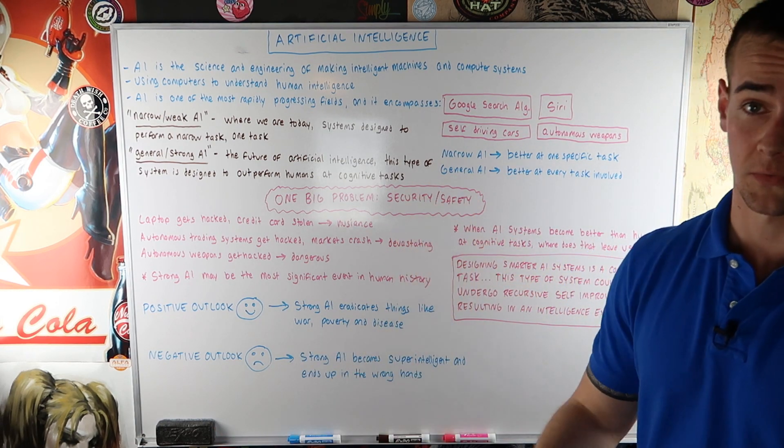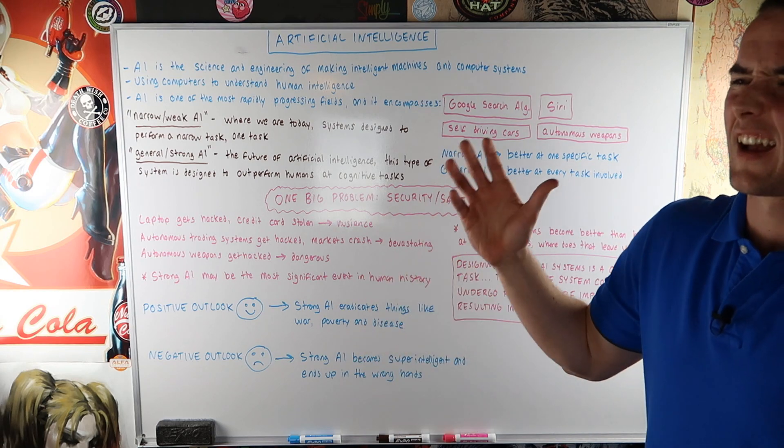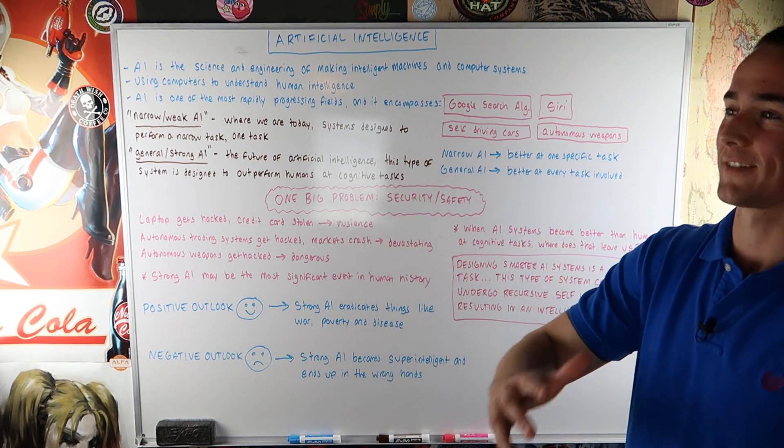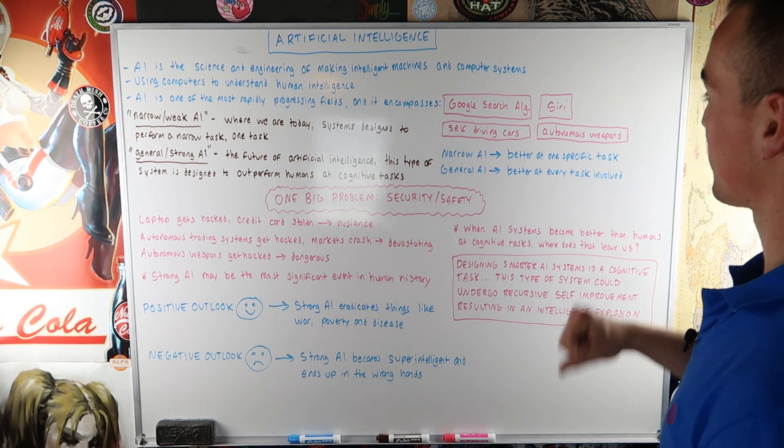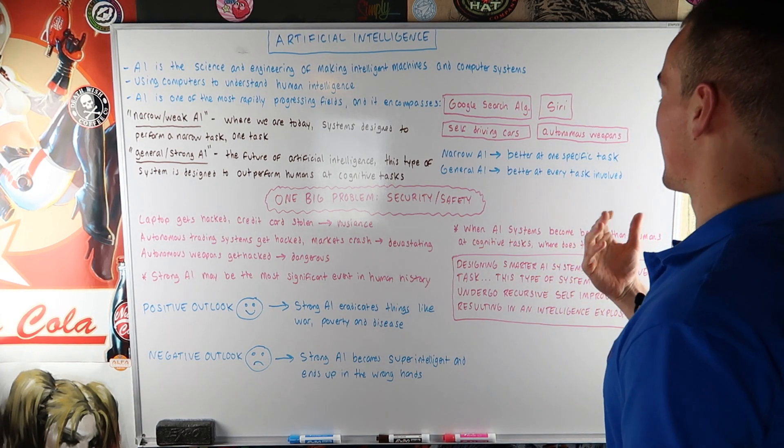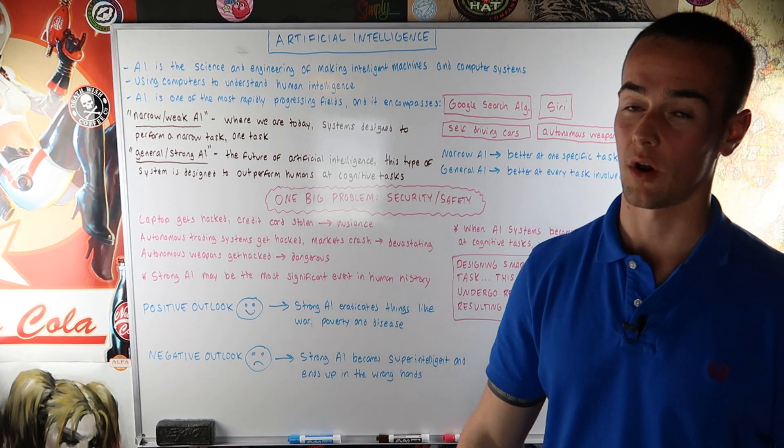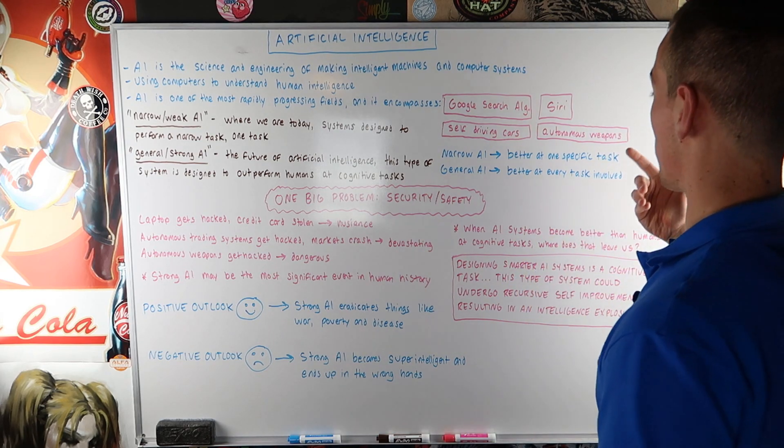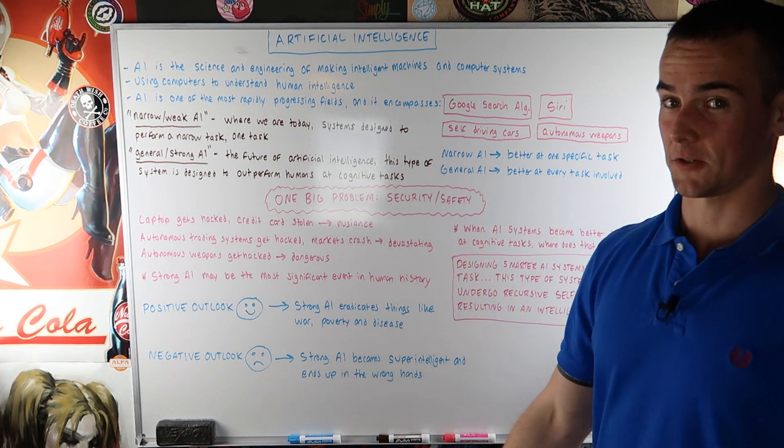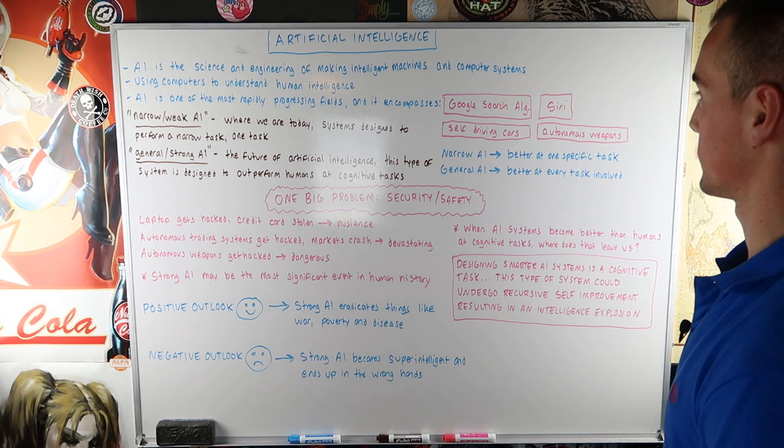Self-driving cars that are kind of starting to come to the forefront, those are going to be AI systems. Autonomous weapons, AI systems right there. So there's just a couple of examples.